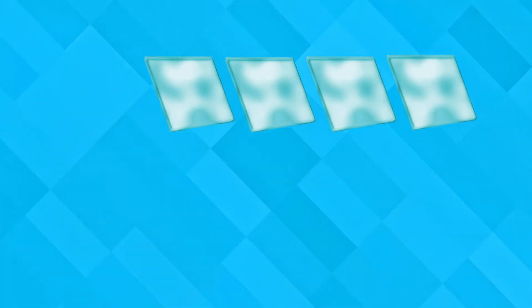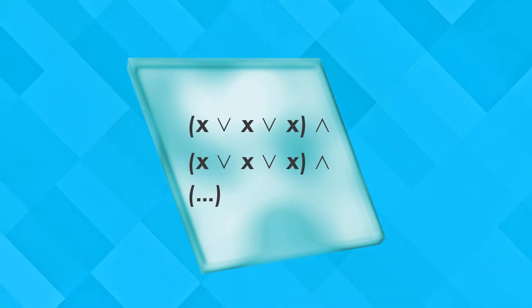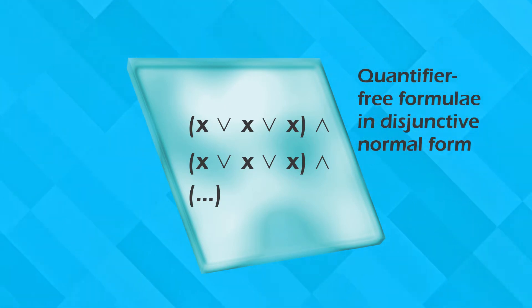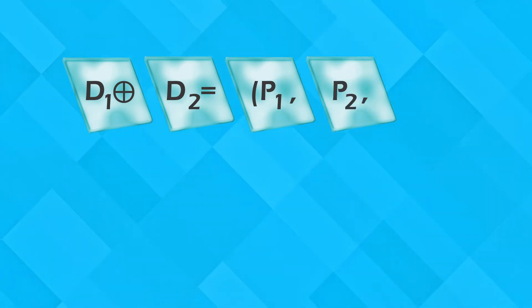Combination methods decide combined decision problems by reducing them to pure sub-problems. I solve combined decision problems by using a protocol-based combination of decision procedures. This protocol-based combination algorithm combines generalized satisfiability problems: D1 equals P1 and VAL1, and D2 equals P2 and VAL2. It assigns to each admissible combination of D1 ⊕ D2, which equals P1 and P2 and VAL of plane component problems.